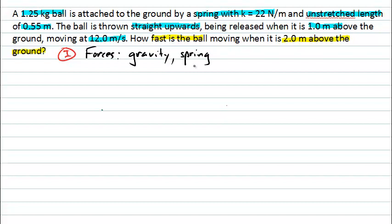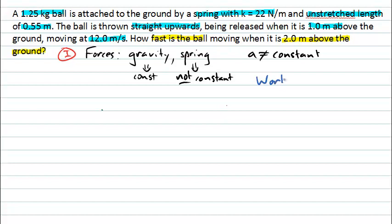We can ignore any force from the hand or whatever else is launching the ball, because we're given information about what happens after the launch. Our gravitational force is constant, but our spring force is not constant. This tells us that the acceleration in this problem will not be constant, and therefore we cannot approach this problem using our equations of motion — those are only valid when the acceleration doesn't change. So we're most likely going to be using considerations of work and energy.